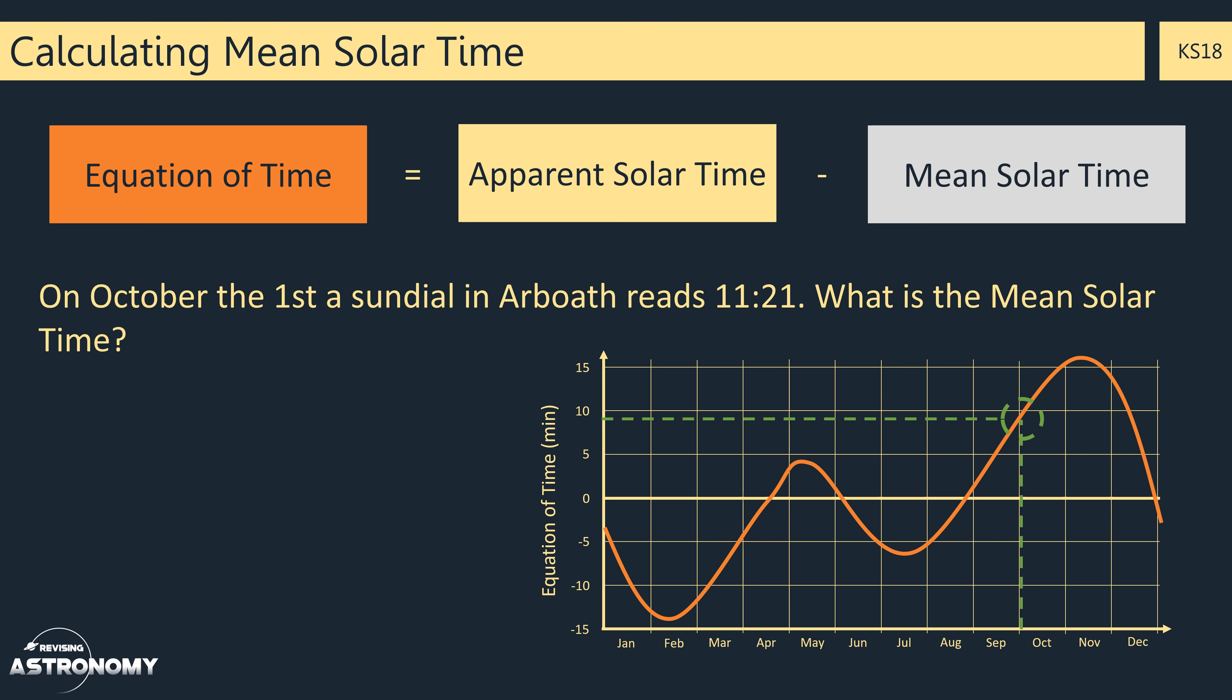We can then substitute it into our equation. So the equation of time 9 equals the apparent solar time, which is 11:21 minus the mean solar time. Again, we need to rearrange it and rearranging the equation shows the mean solar time is 11:21 minus 9 minutes, which means that the mean solar time on the 1st of October in Arbroath is 11:12 at this time.